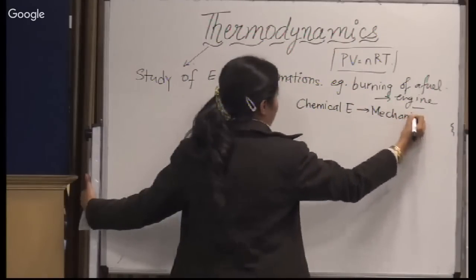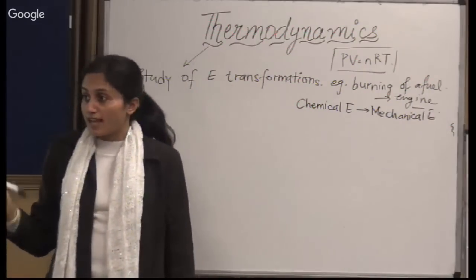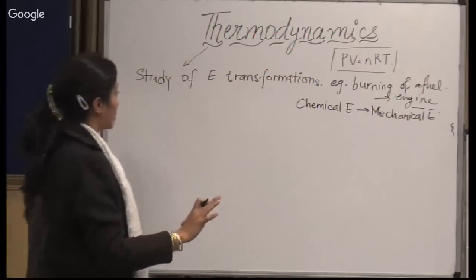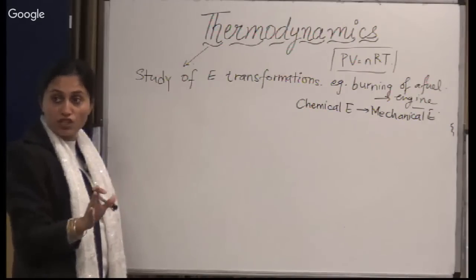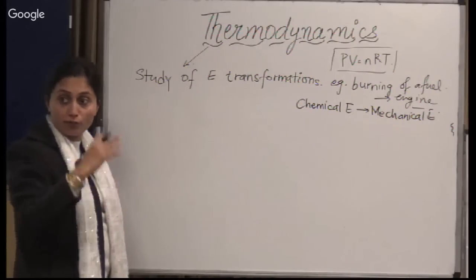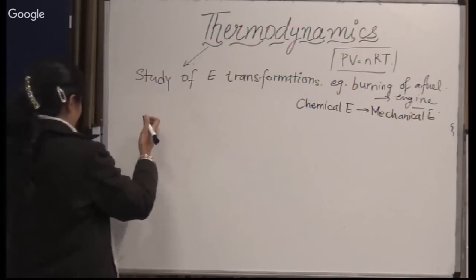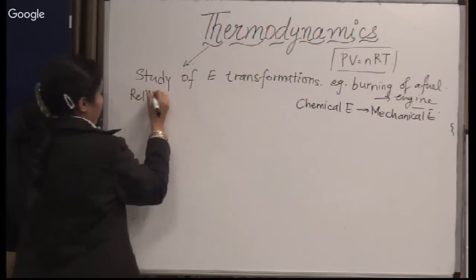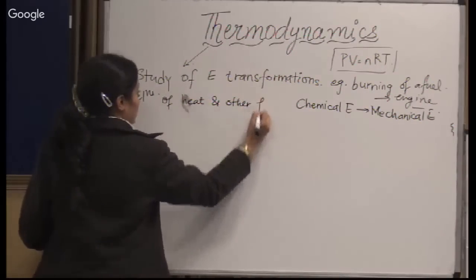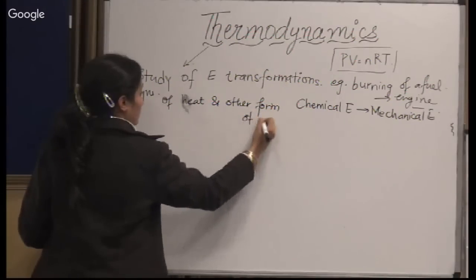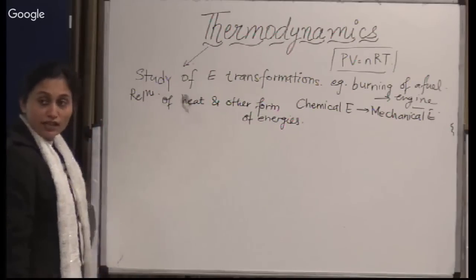It is very important that you understand the meaning of chemical thermodynamics. You talk about any kind of energy transformation — it is the conversion of one form of energy into another form of energy by some kind of thermal changes related to some kind of movement. That means your process is not at all static. From here you get the relationships of heat and other forms of energies.